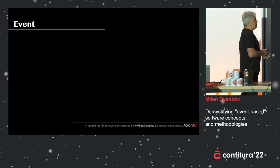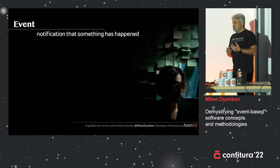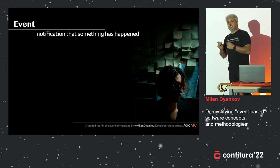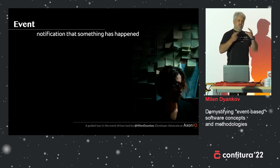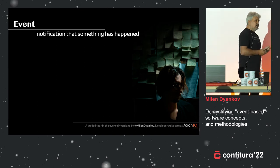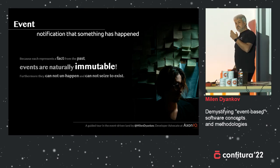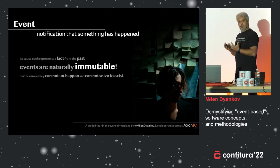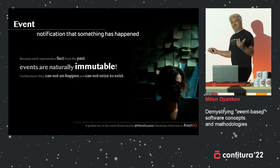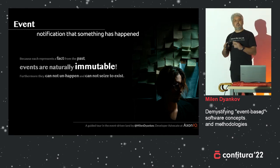Now that I've mentioned the word 'event' so many times, let's try to define what an event is. Essentially, an event is a notification that something has happened — a message that carries information about a change. Simple, but powerful. Powerful because events by nature are immutable. We developers love immutable things, right? It's so easy to work with immutable things — you don't have to worry about things being changed.